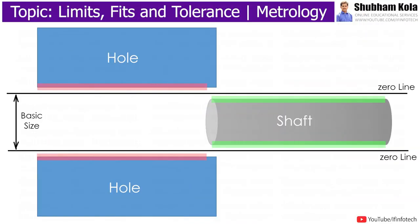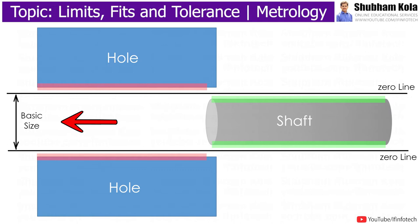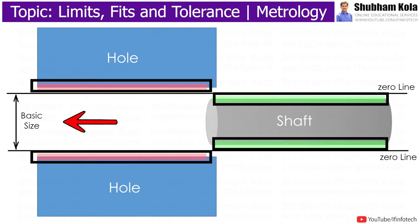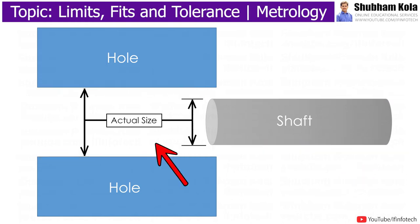In this video, we are going to discuss the terminology used in fits and tolerances for hole and shaft assembly. The basic size is the size with reference to which limits of size are fixed, where the zero line is the straight line corresponding to basic size, and actual size is the actual major dimension of a part.